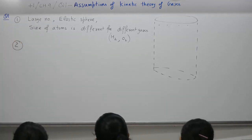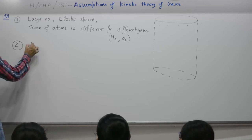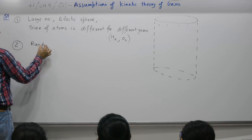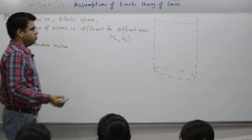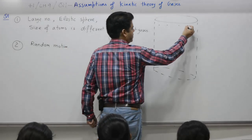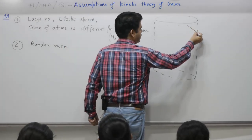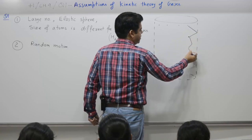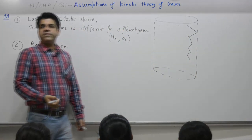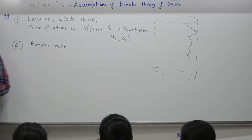Two, the molecules of gas are in state of continuous rapid and random motion. Random motion means what? There is no predetermined path. Atom can move this way, collides with the wall, again collision takes with another atom and it moves haphazardly, randomly, indisciplined, unorganized, unproductive.